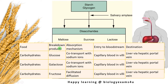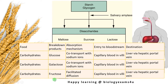Carbohydrates are broken down into glucose. The absorption mechanism is by co-transport with sodium ions, also called the sodium-glucose transporter. Glucose then enters the capillary blood in the villi, with the destination being the liver via the hepatic portal vein. In the case of galactose, the same happens by means of sodium-glucose transporters, entering capillary blood in the villi and travelling to the liver via the hepatic portal vein. Fructose movement is by facilitated diffusion, also entering capillary blood in the villi and reaching the liver via the hepatic portal vein.